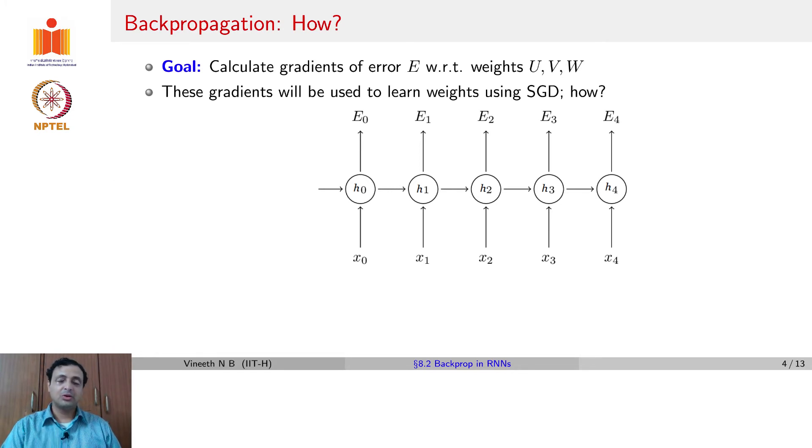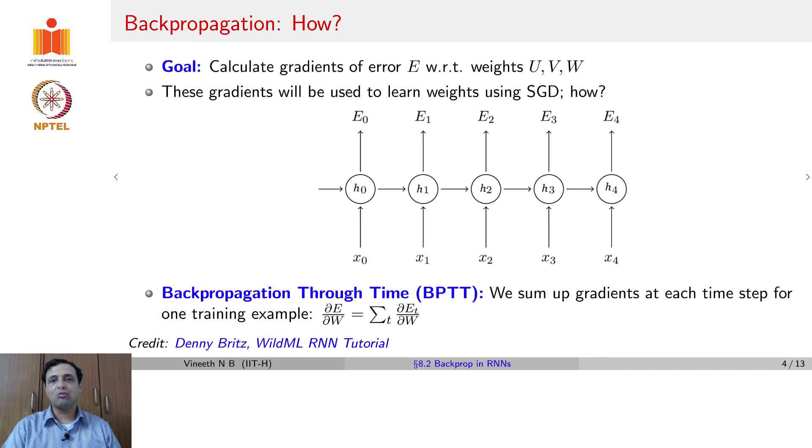It is similar to the general principle of computing the gradient for any other neural network. If a weight influenced an output through multiple paths, then you have to sum up the contribution of that weight to the output along all possible paths. In our case, you would have a weight here, here, here, here, for all the time steps. And all of them are the same weights in an RNN.